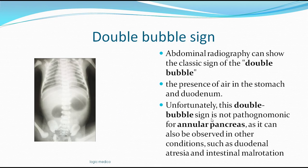The double bubble sign is not only seen in annular pancreas; it is also seen in duodenal atresia, where the duodenum is narrowed by itself, and in malrotation of the intestine. Therefore, though the double bubble sign is one sign of annular pancreas, other investigations must be done to confirm it. The annular pancreas then has to be excised to relieve the constriction around the duodenum, thereby facilitating digestion and propulsion of food forward.